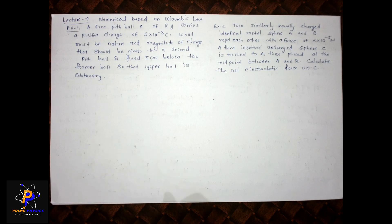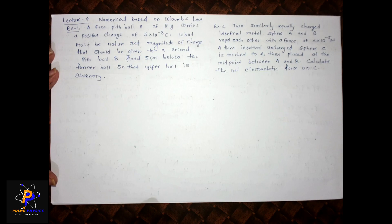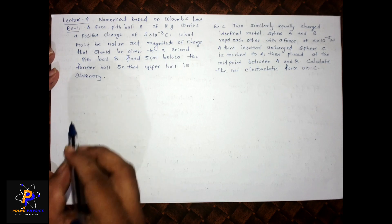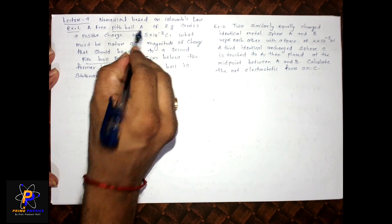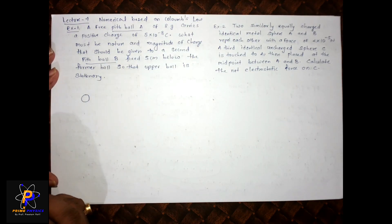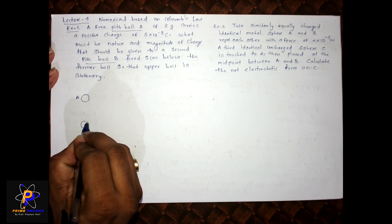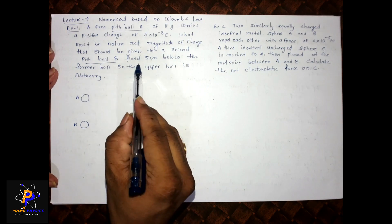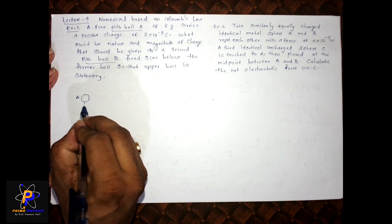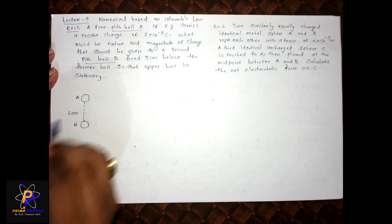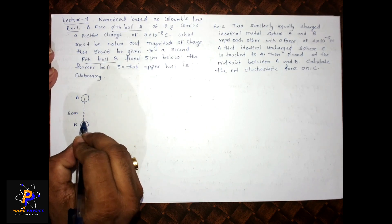Okay, so let us start with lecture number four — numericals based on Coulomb's Law. There is a free pit ball whose mass is 8 grams and it carries a positive charge of 5×10⁻⁸ coulombs. What must be the nature and magnitude of a charge that should be given to a second pit ball B, which is fixed 5 centimeters below ball A? So there are two balls — ball A is free, and ball B is 5 centimeters below ball A.